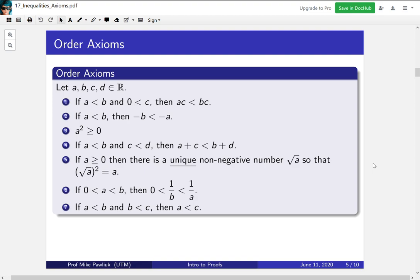The sixth one says that if a and b are both positive and a is less than b, then taking a reciprocal changes the order. And the final one says that if a is less than b and b is less than c, then a is less than c. That's called being transitive.